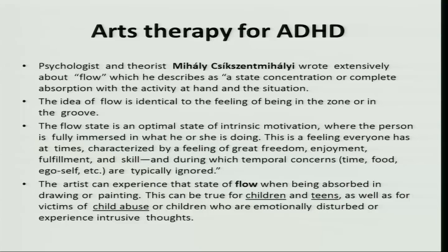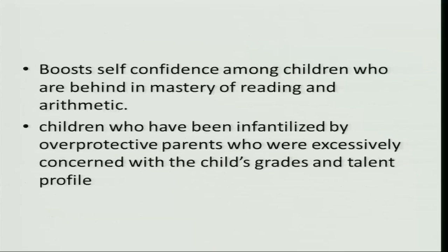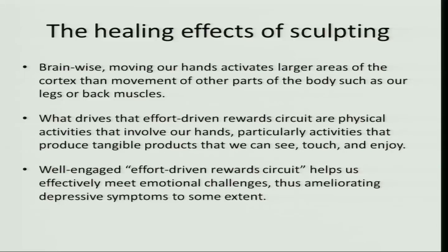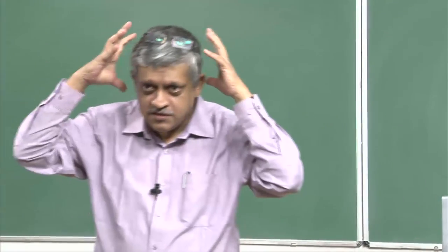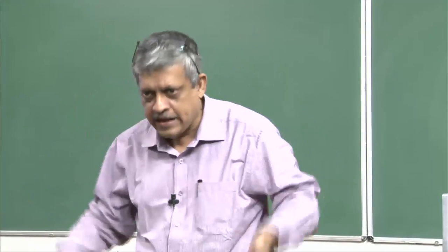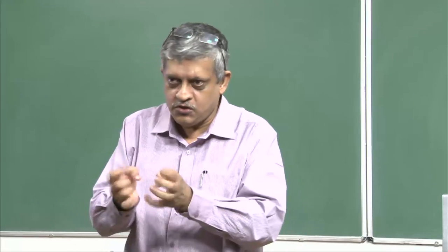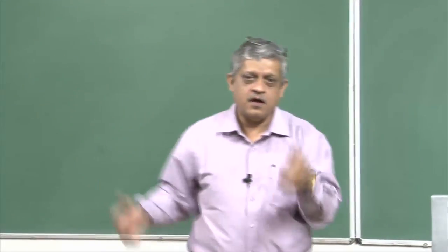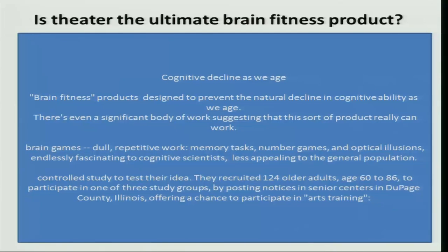This brings me to arts therapy for a whole series of people with brain and mind disorders. There are various art interventions — for example, role play, psychodrama, and sculpting. Sculpting has healing effects because in the human brain the hand has greater representation than, say, the leg. So when you use your hands, you actually massage much larger areas of the brain, which are then used for other things. Some people have said theatre is the ultimate brain fitness product.